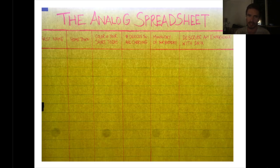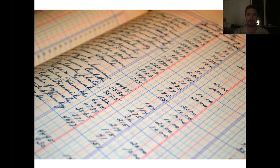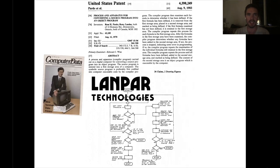Talking about spreadsheets — it's basically an arrangement of rows and columns. This is what you would call an analog spreadsheet. For a very long time, this is how people kept their books, manually. Rows and columns of information and data transcribed by hand.